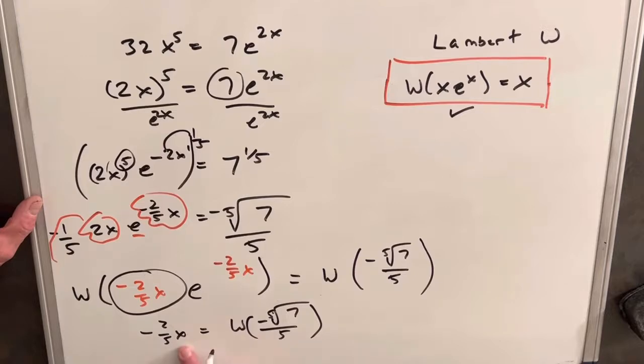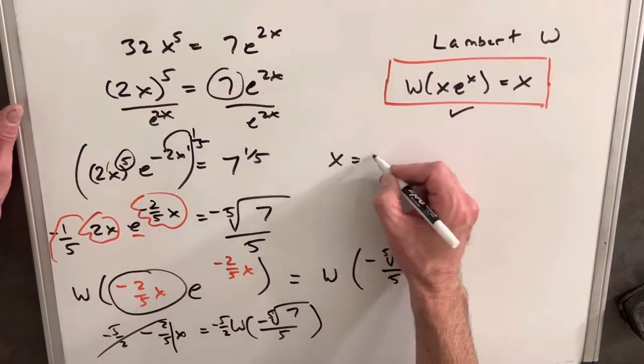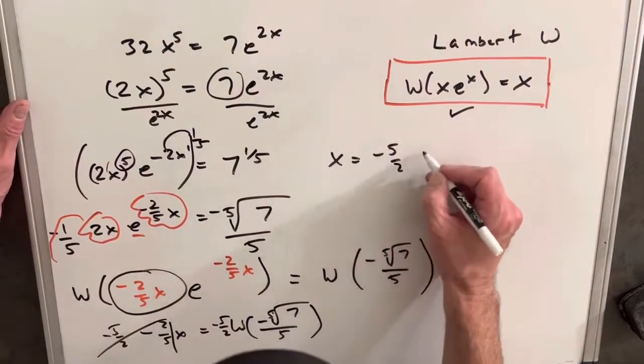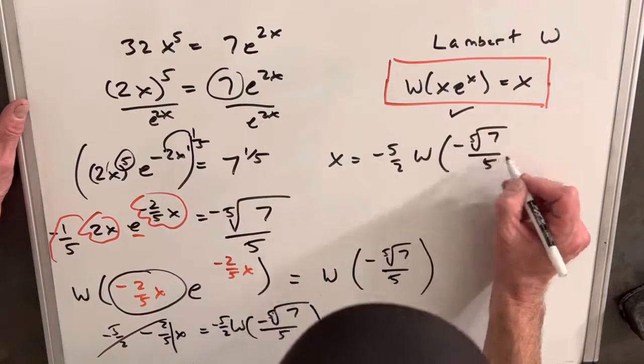And then we can isolate our x just by multiplying by minus 5 halves. Pretty easy. So that's going to cancel the 1 here, and we're going to have minus 5 halves here. So let me just write this out so it's more neat. So we're going to have our solution as x equals minus 5 halves Lambert W of minus 5th root of 7 over 5.